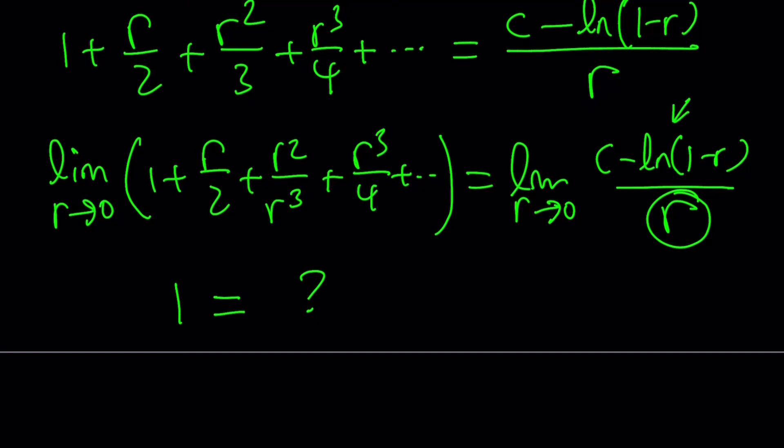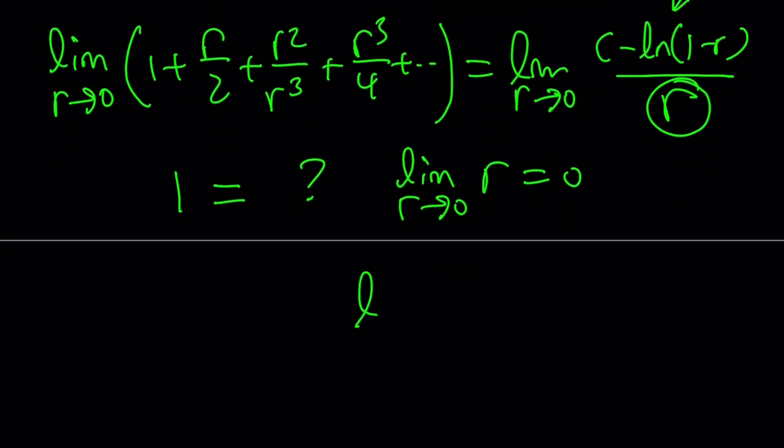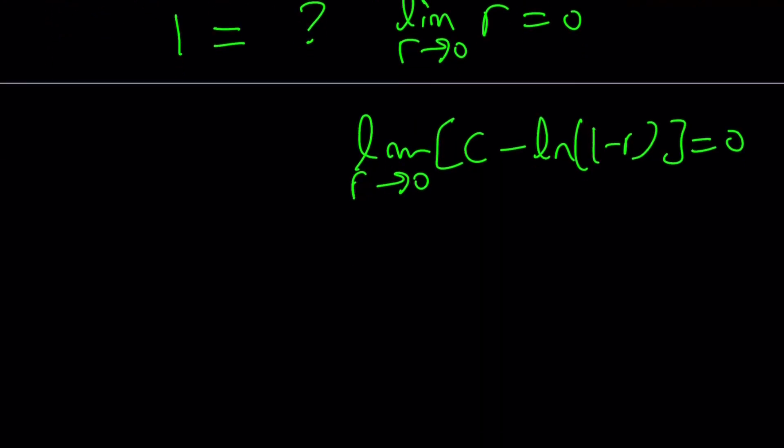Make sense? So we're going to have the 0 over 0 situation. L'Hôpital's rule, indeterminate form, whatever we're going to call that. But here's what we need. Since limit as r approaches 0 of r is 0, we must have limit as r approaches 0 of c minus ln of 1 minus r to approach 0. But how is that possible? If r approaches 0, this is going to approach 0. This is going to approach ln 1, which is 0. And this is going to approach c. So I want c to be 0, in other words. Yay, I got rid of c. Isn't that awesome?